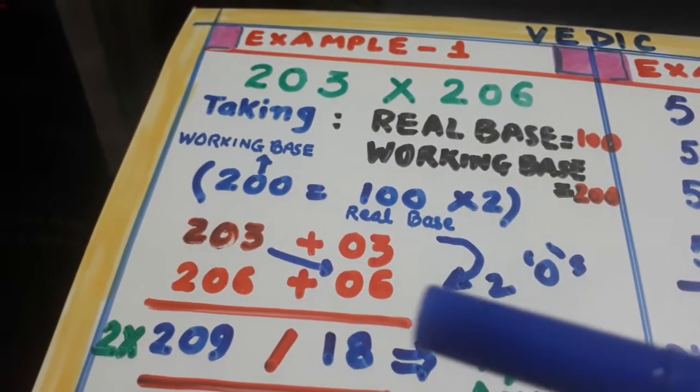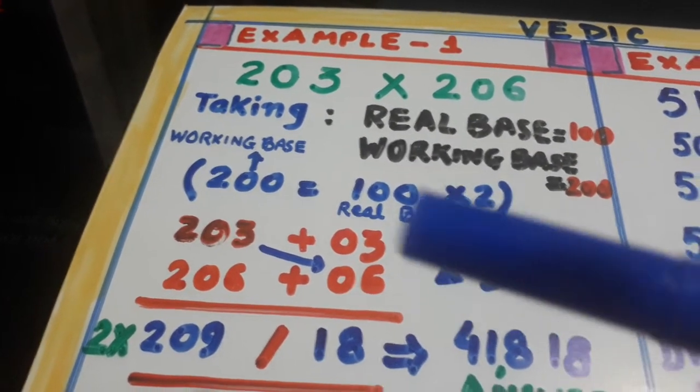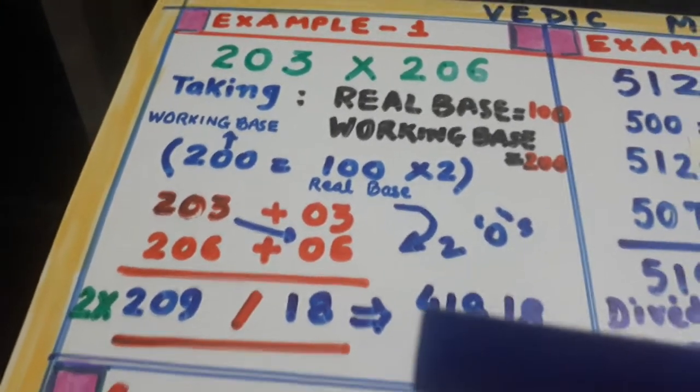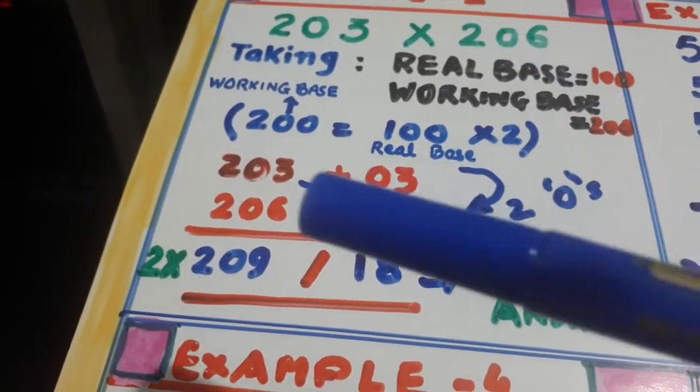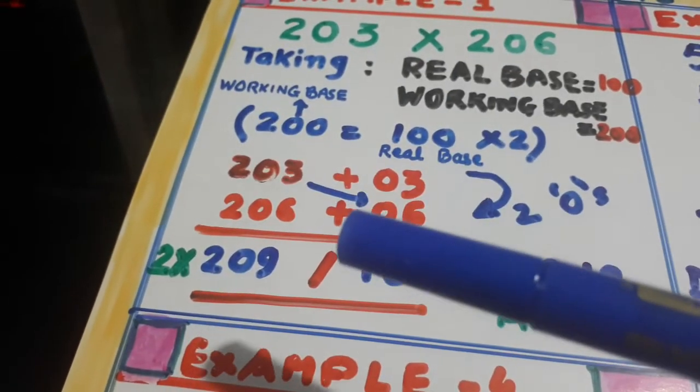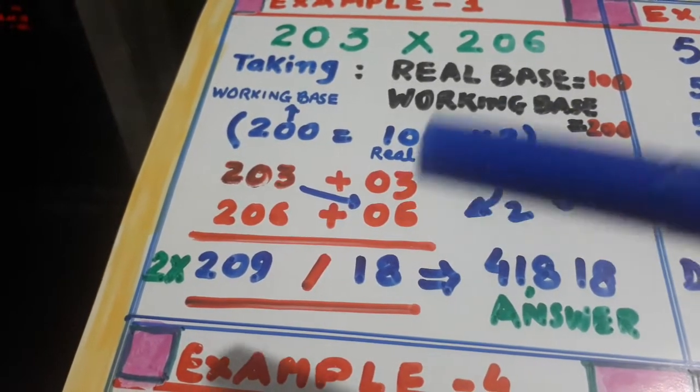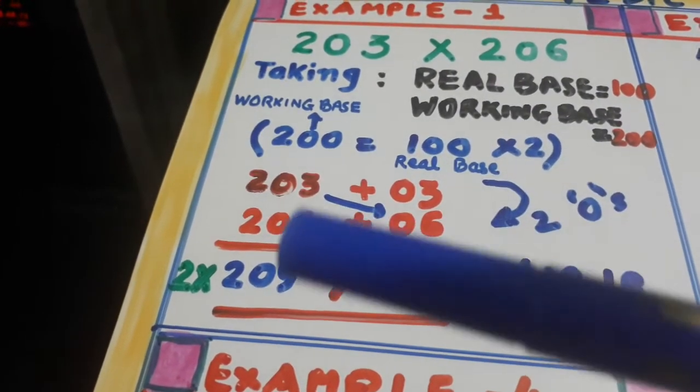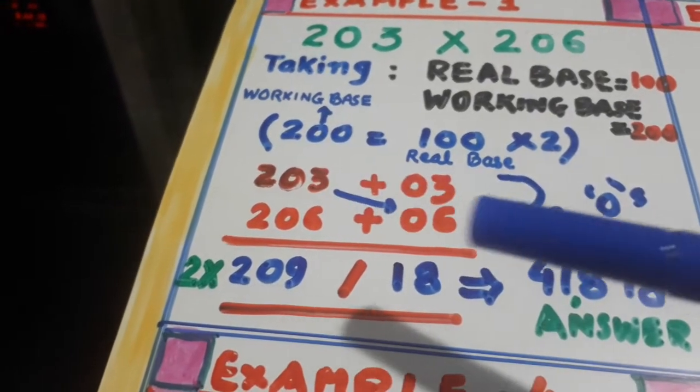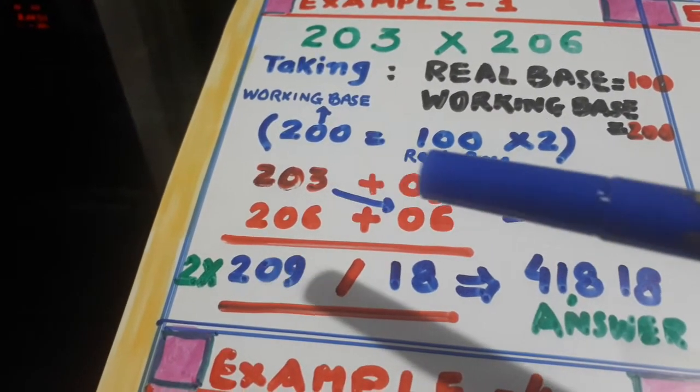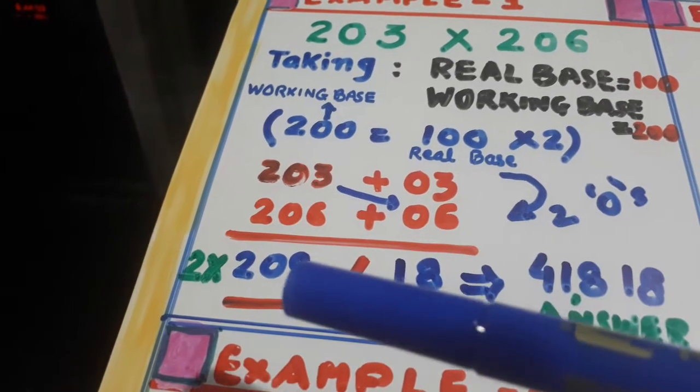This 206 is 6 more than the working base. Now what you have to do, you have two pluses, this is the slash. 6, 3 are 18. And now take it diagonally, 203 plus 6, 209.